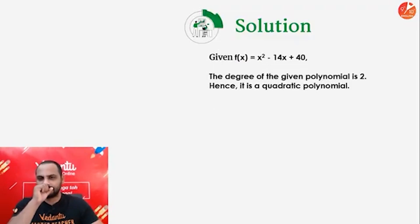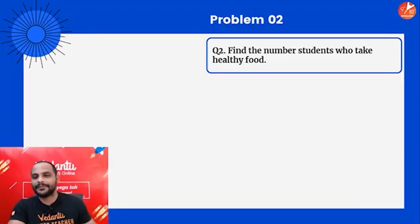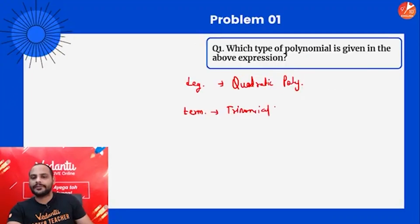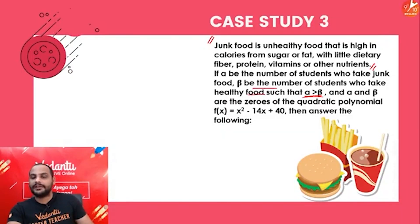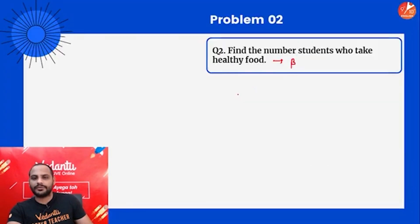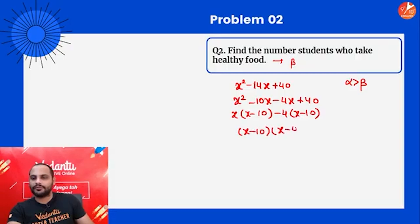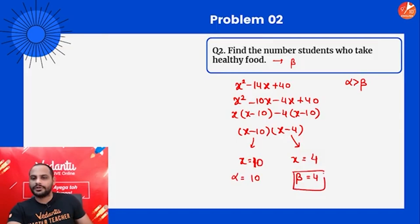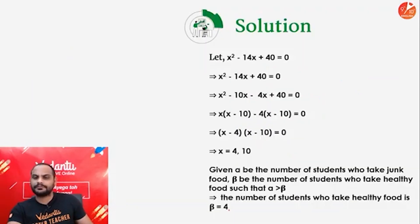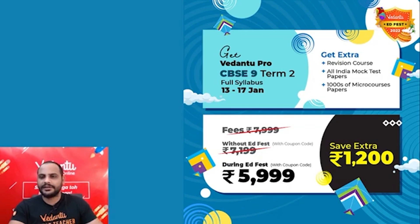Find the number of students who take healthy food. Beta represents healthy food students. The polynomial is x² - 14x + 40 = 0. Splitting: x² - 10x - 4x + 40 = 0 → x(x - 10) - 4(x - 10) = 0 → (x - 10)(x - 4) = 0. So x = 10 or x = 4. Since alpha > beta, alpha = 10 and beta = 4. The number of students who take healthy food is 4.